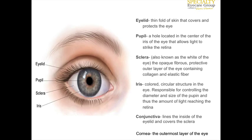Let's start with the very front. The eyelid is a thin fold of skin that covers and protects the eye. The pupil is actually a small hole located in the center of the iris. The sclera is the white part of the eye — it's opaque and it's a protective outer layer. The iris surrounds the pupil; it's colored and responsible for controlling the diameter of the pupil, thus affecting the amount of light that gets in.